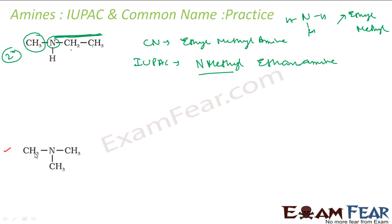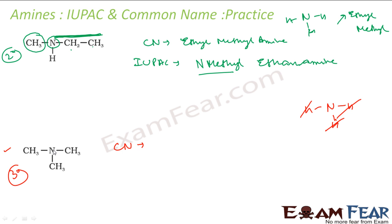Let us compare this next compound with ammonia NH3. You will see that all the hydrogens are replaced with methyl groups, so it is a tertiary (3°) amine. We want to write the common name — it is pretty easy because there are three methyls attached, so it is trimethylamine. The common name form is simply alkyl amine.